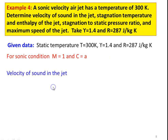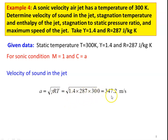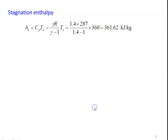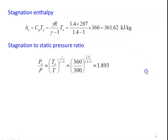Stagnation temperature: T₀ = T × [1 + (γ-1)/2 × M²] = 300 × [1 + (0.4/2) × 1²] = 360 K. Stagnation enthalpy: H₀ = Cp × T₀ = [γR/(γ-1)] × T₀ = (1.4 × 287/0.4) × 360 = 361.62 kJ/kg. Stagnation to static pressure ratio: P₀/P = (T₀/T)^(γ/(γ-1)) = (360/300)^(1.4/0.4) = 1.893. Maximum speed: C_max = √(2H₀) = √(2 × 361.62 × 1000) = 849.94 m/s.